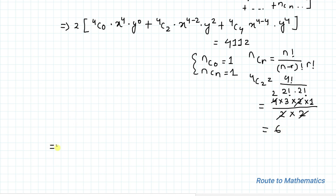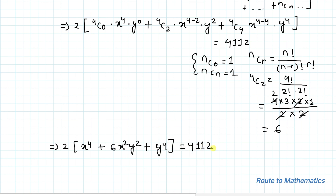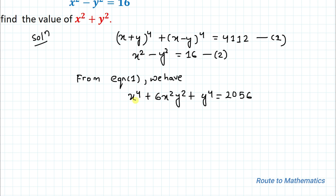Applying the values, we have 2×[x⁴ + 6x²y² + y⁴] = 4112. Dividing both sides by 2, we get x⁴ + 6x²y² + y⁴ = 2056. This is our simplified form of equation 1.